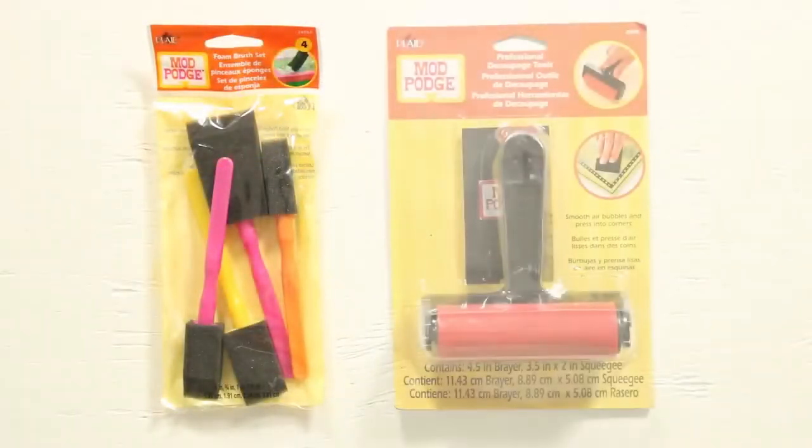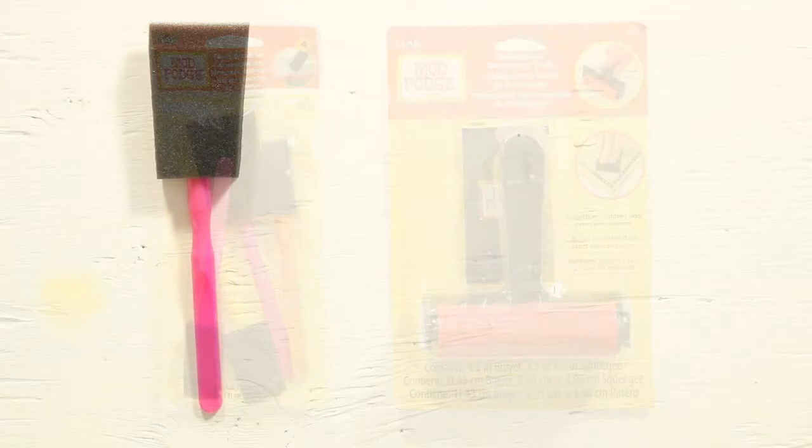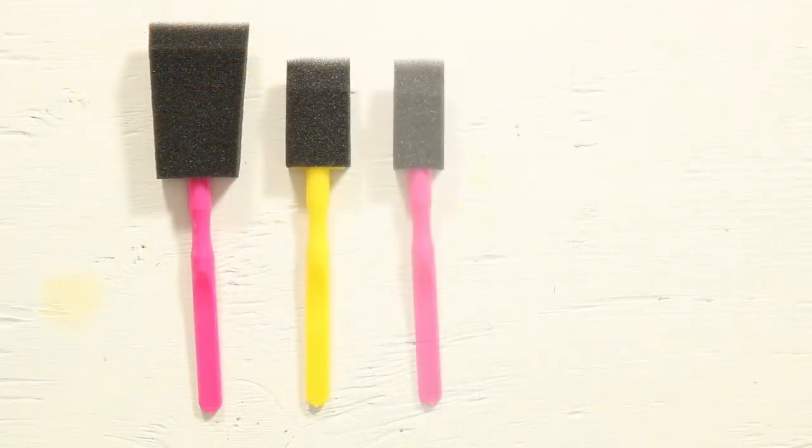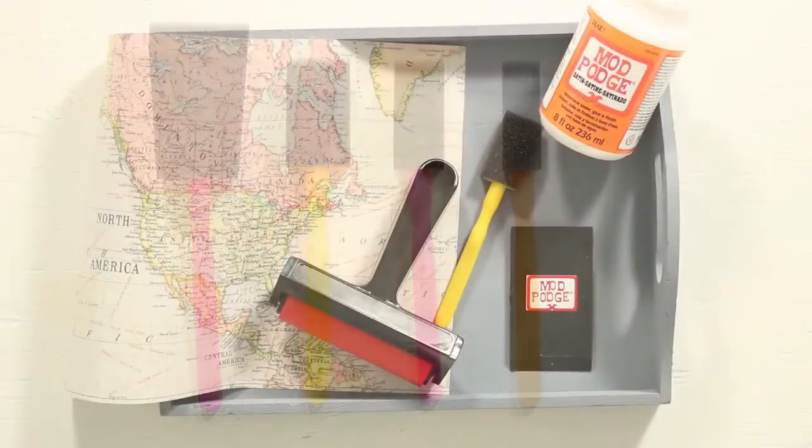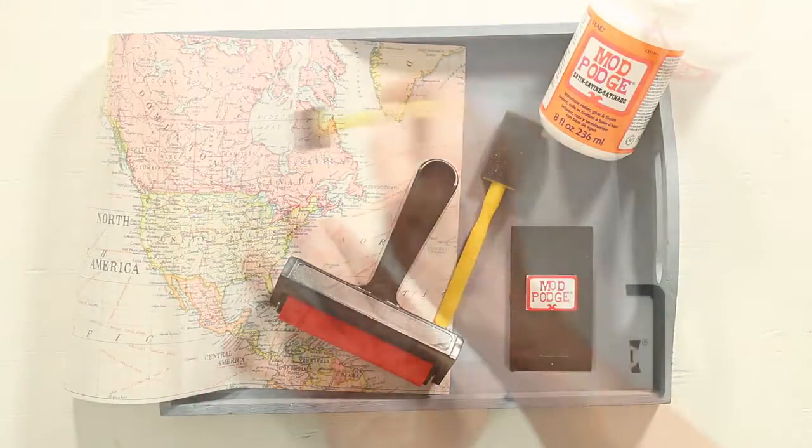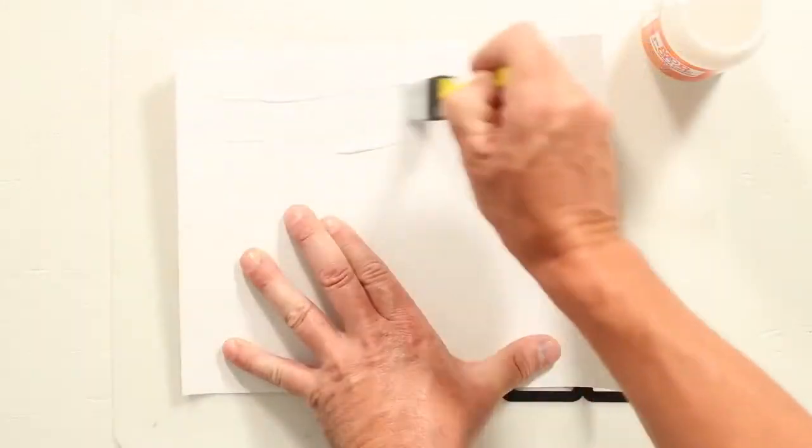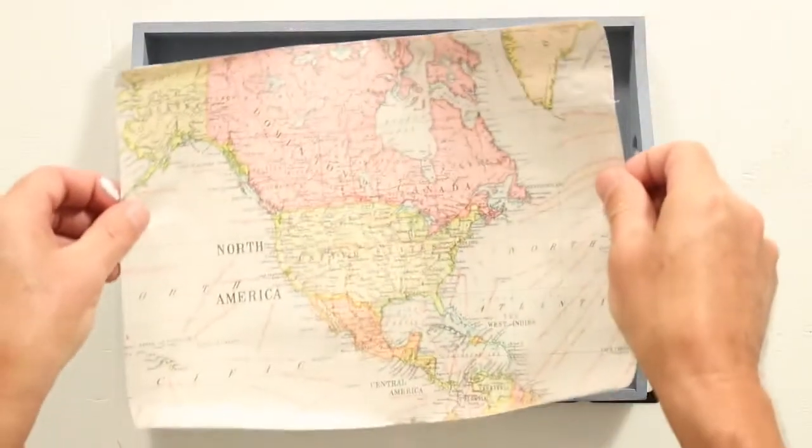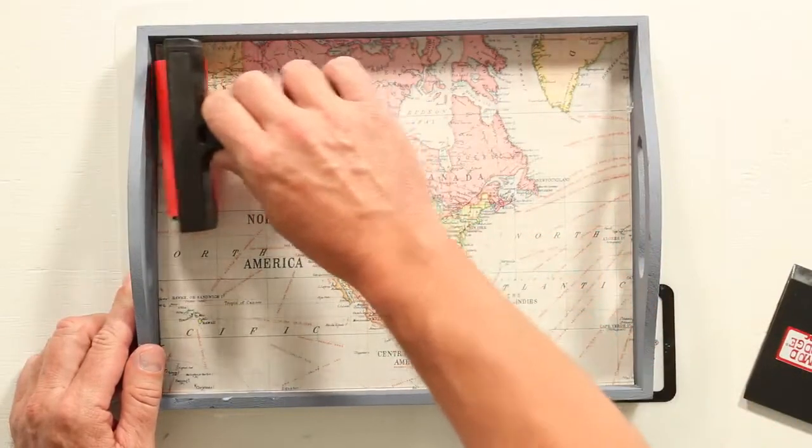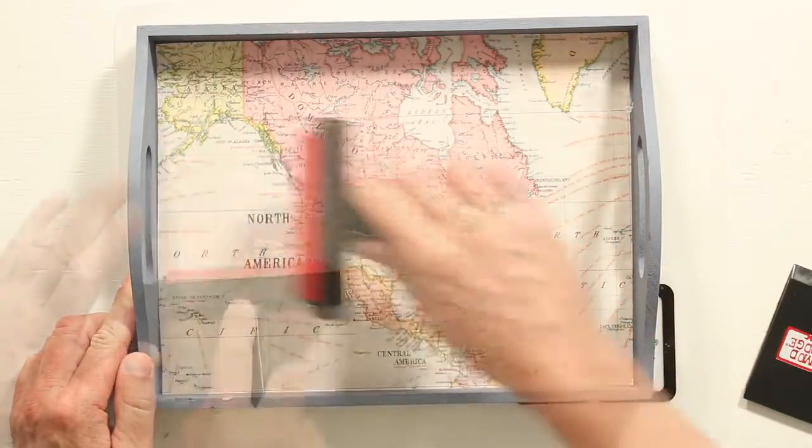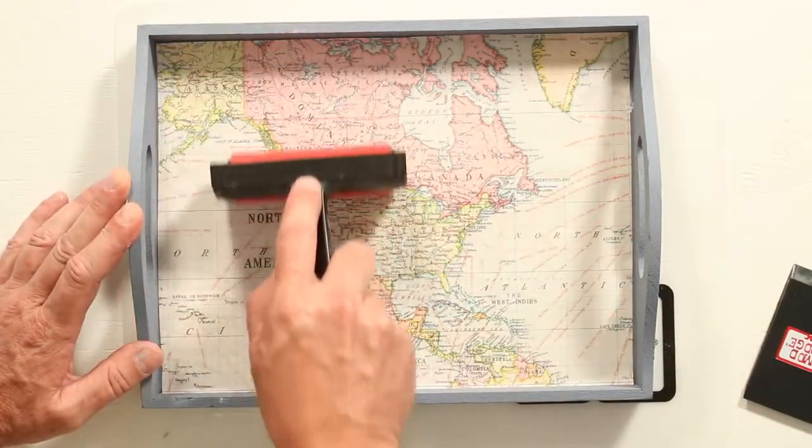The foam brushes and brayer squeegee set are the most basic tools one needs for decoupage. The brushes come in four sizes. They are a great value. Their plastic handles are durable and they clean up with soap and water. Use your brushes to apply Mod Podge to your paper and projects. Use the brayer to remove wrinkles and ensure a firm bond. The brayer is 3 and 3 quarters inch wide and washes with soap and water.